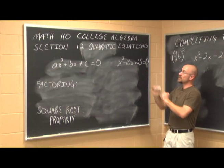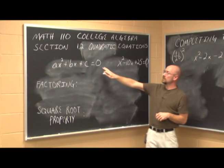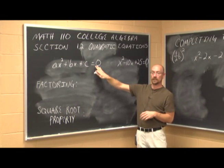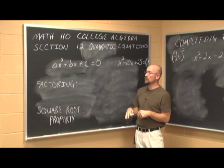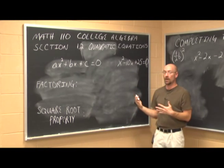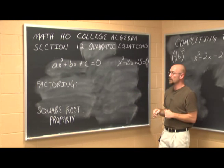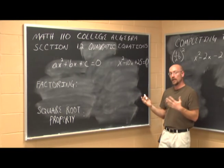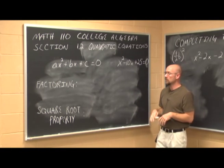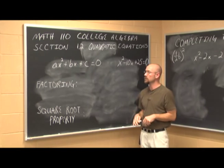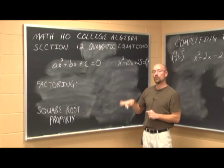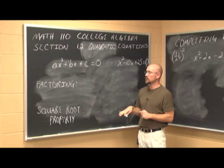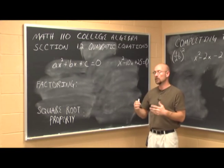When we're dealing with these, generally we'll want to set them equal to 0, depending on what method we're using to solve a quadratic equation. We use the properties of equality — what we do to one side, we do to the other. We're going to look at four different methods, and the first one is factoring.